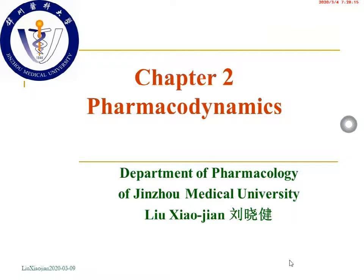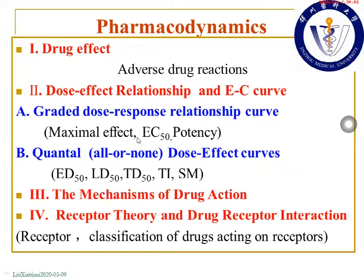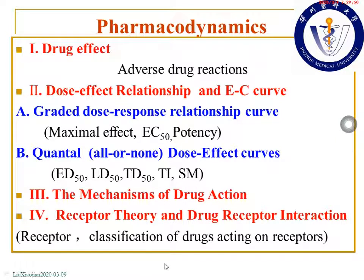Hello, students. Today we are going to study the next chapter about pharmacodynamics. In this chapter, you will mainly study some technologies and regularities about pharmacodynamics. The chapter includes several topics: technologies of adverse drug actions, the EC curve describing the dose-effect relationship, mechanisms of drug action, and receptor theory. Based on this, you can study the classification of drugs acting on receptors.